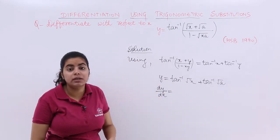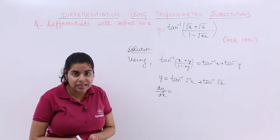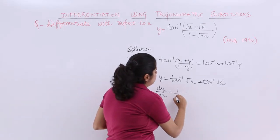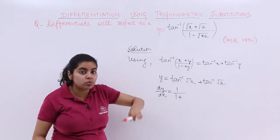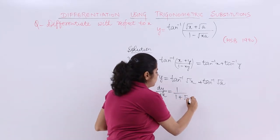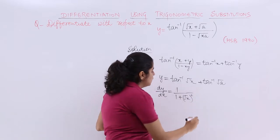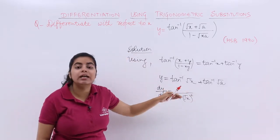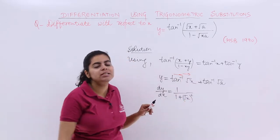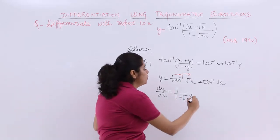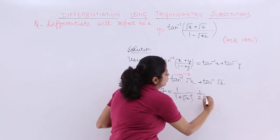Tan inverse √x: what is the differentiation of tan inverse x? It is 1/(1+x²). But with √x it becomes 1/(1+(√x)²). Does this get completed? No, because by chain rule, the differentiation of √x is 1/(2√x).